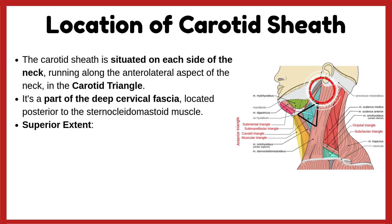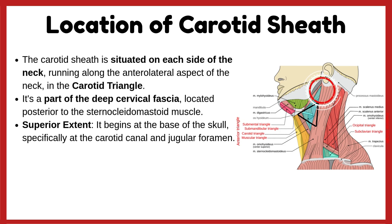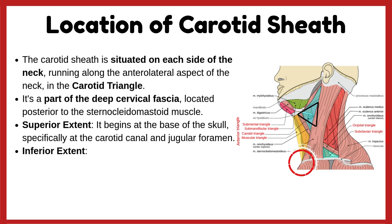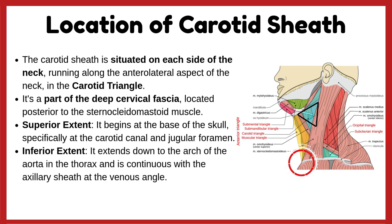The superior extent of the carotid sheath begins at the base of the skull, specifically at the carotid canal and jugular foramen. The inferior extent reaches down to the arch of the aorta in the thorax, and is continuous with the axillary sheath at the venous angle.